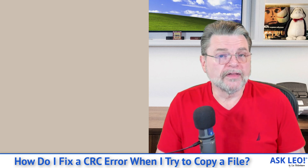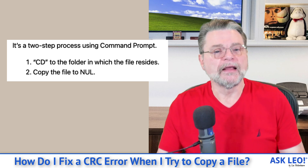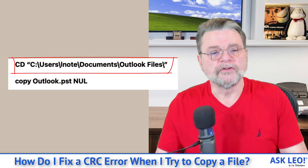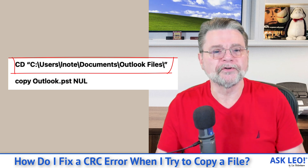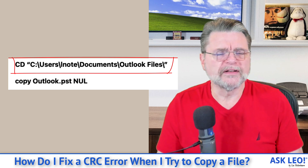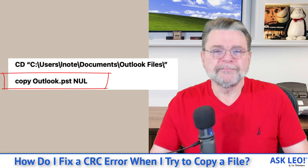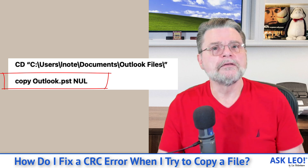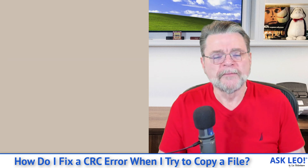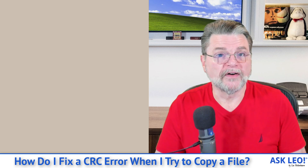The easiest way to do this is to go into the command prompt and change directories to wherever the file you're looking at happens to be. In the case of my PST, it would be: CD C:\Users\LNote\Documents\Outlook Files. There I would find the file outlook.pst. Your file location and file name may differ based on what you're experiencing. Then type: copy outlook.pst NUL. NUL is a special device built into Windows that is nothing, so we've instructed it to copy the file to nothing — it will read the entire file and do nothing with it.